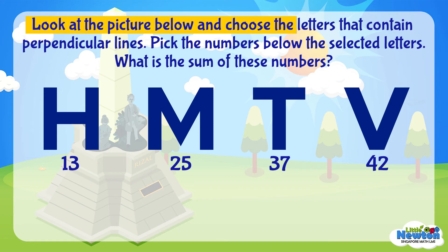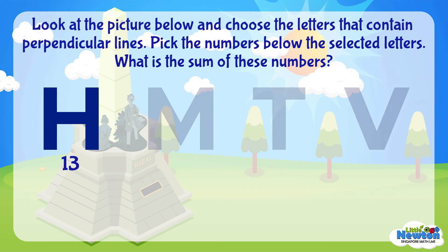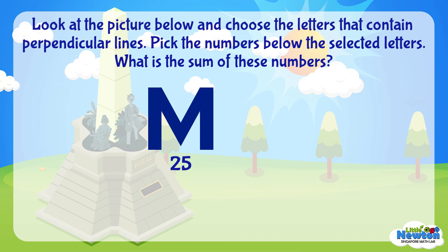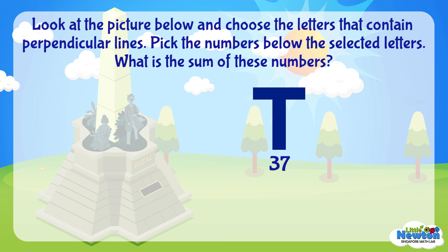Look at the picture below and choose the letters that contain perpendicular lines. Can we identify the perpendicular lines in each letter? Let's begin with the first letter, H. Does H have perpendicular lines? Yes, these are the perpendicular lines in H. Next, let's look at the letter M. Do you think there are any perpendicular lines in M? No, there are no perpendicular lines in M. How about the letter T? Yes, the letter T has perpendicular lines.